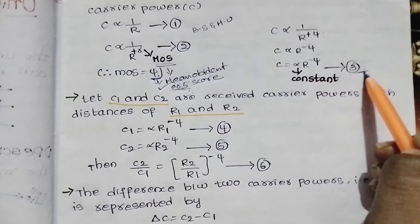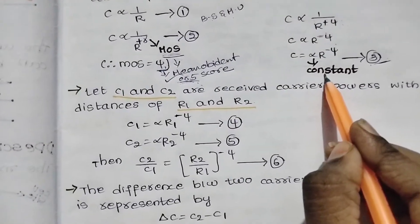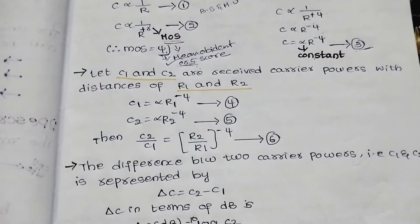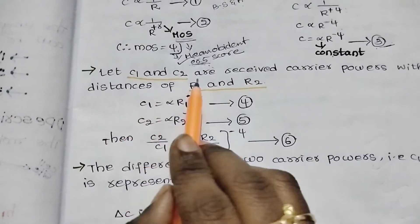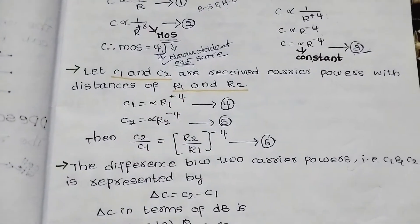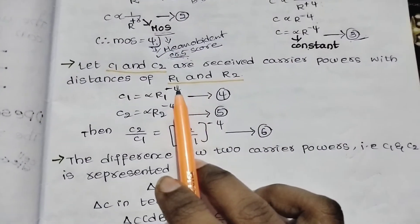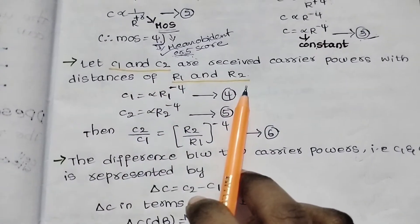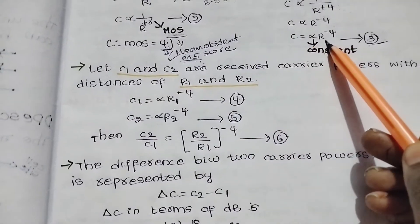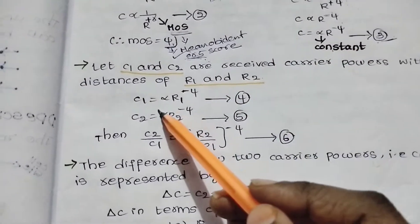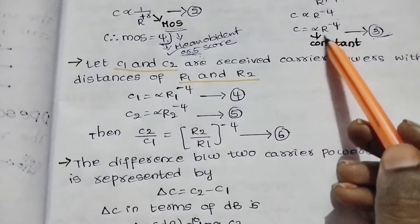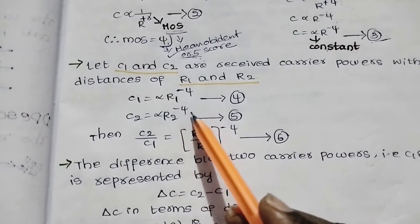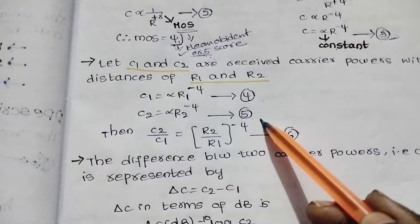We get the third equation with alpha and a constant. Let C1 and C2 be two received carrier powers with distances R1 and R2 respectively. C1 equals alpha times R1 to the power of minus 4, and C2 equals alpha times R2 to the power of minus 4. These are equations 4 and 5.